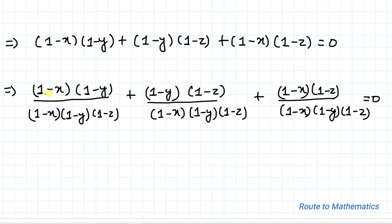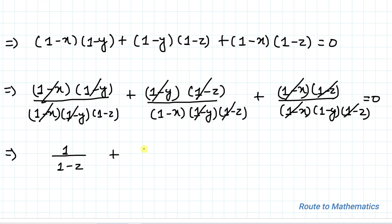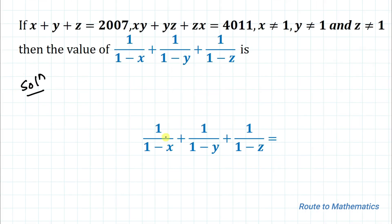In the first term, (1-x) and (1-y) cancel out, leaving 1/(1-z). In the second term, (1-y) and (1-z) cancel out, leaving 1/(1-x). In the third term, (1-x) and (1-z) cancel out, leaving 1/(1-y). So we have 1/(1-z) plus 1/(1-x) plus 1/(1-y) equals 0. Thus our answer for 1/(1-x) plus 1/(1-y) plus 1/(1-z) is 0. I hope you understood the solution. Thanks for watching — please subscribe to my channel and hit the like button for more such interesting questions!